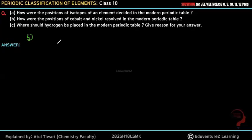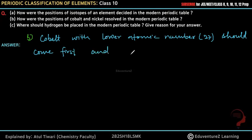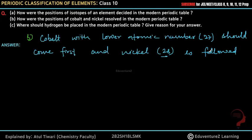Elements with lower atomic numbers are placed first. Cobalt has atomic number 27 and nickel has atomic number 28. So in the modern periodic table, cobalt comes before nickel because the modern periodic table is arranged in order of increasing atomic number.